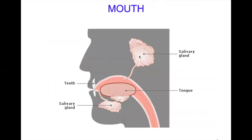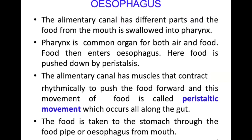Carbohydrate is digested in the mouth along with chewing. After swallowing, the food enters into the pharynx. The alimentary canal has different parts, and food from the mouth is swallowed into the pharynx, which is a common organ for both air and food.